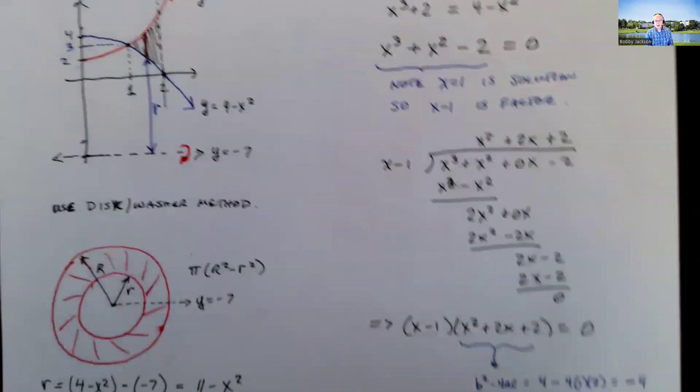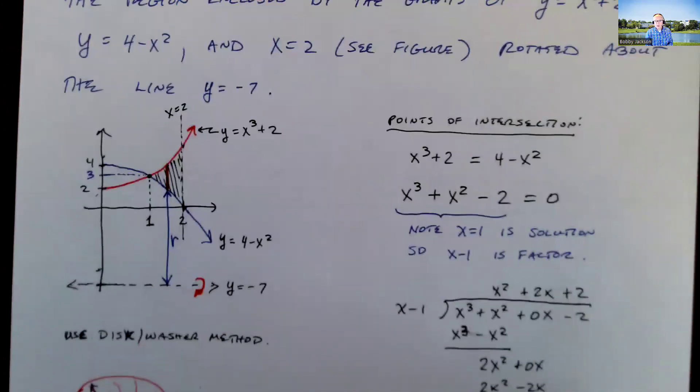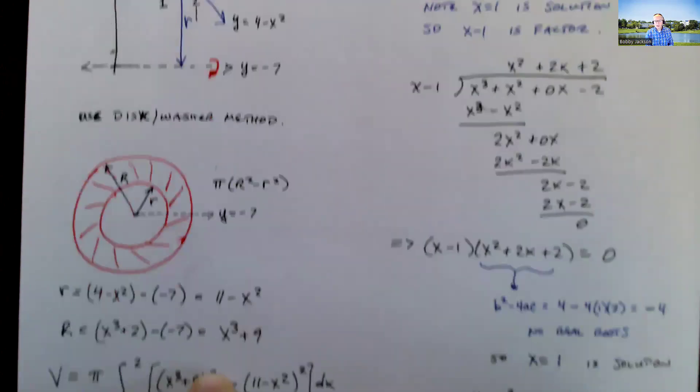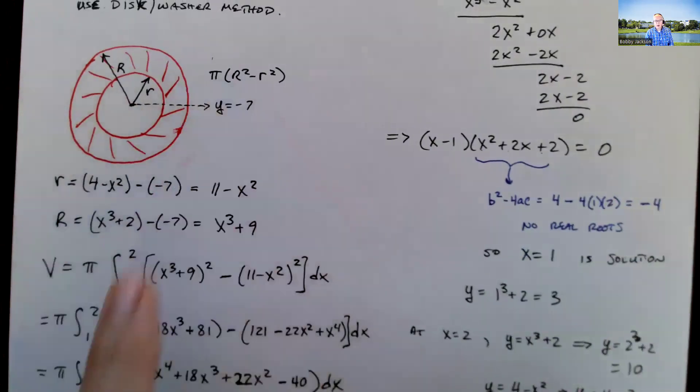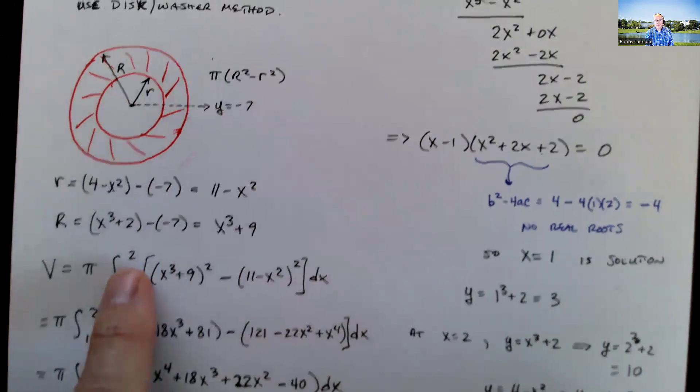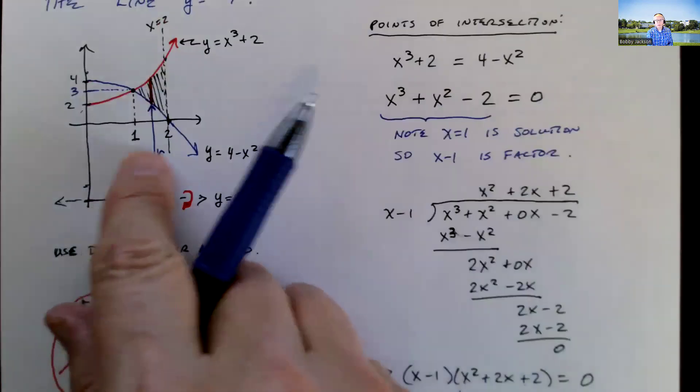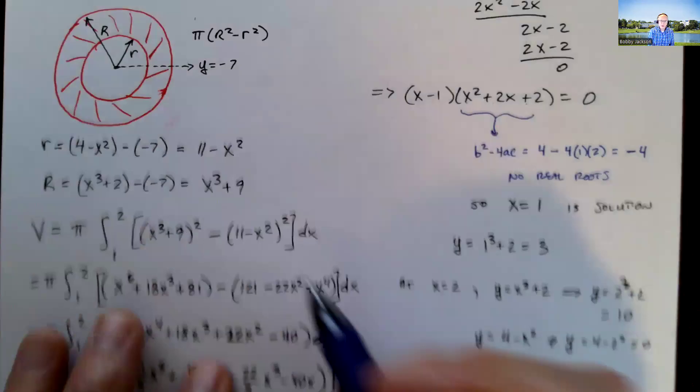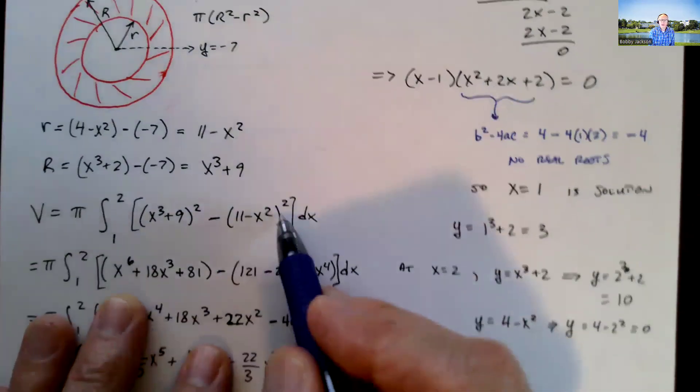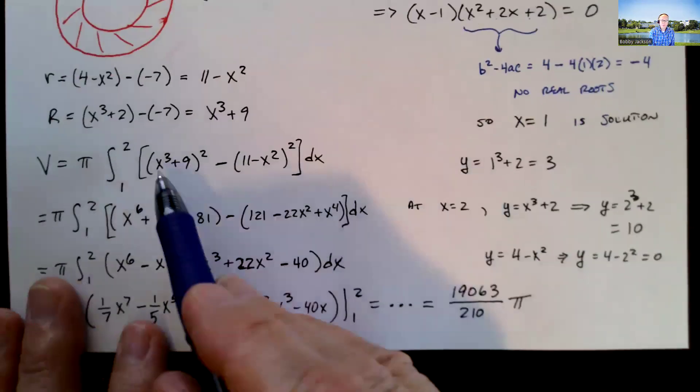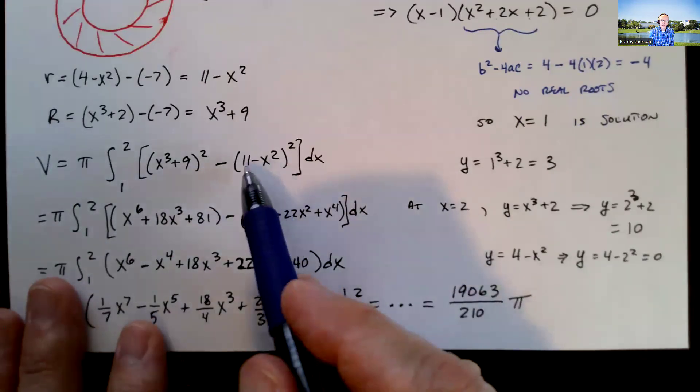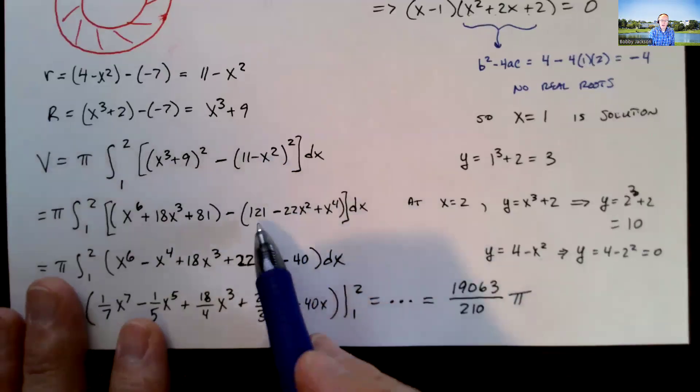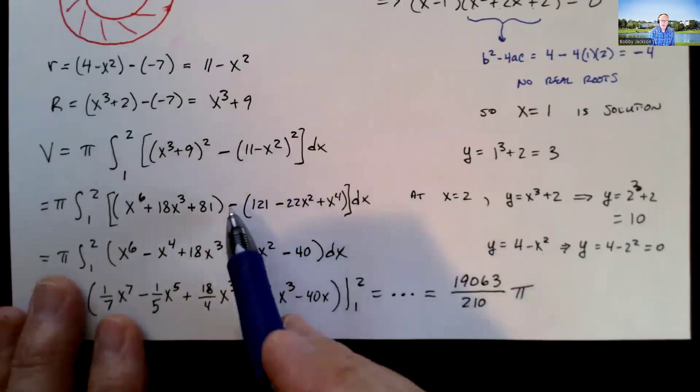So that's all the setup. There's no calculus at all that we've really done. Now we do calculus, which is to integrate this cross-sectional area from x equal 1 to x equal 2. Remember, we're integrating from x equal 1 to x equal 2, and so it's big r squared minus little r squared. So we've got some algebra to do. I go ahead and expand x cubed plus 9, I get this. Expand 11 minus x squared, I get this. Distribute this negative through, changes all the signs there.